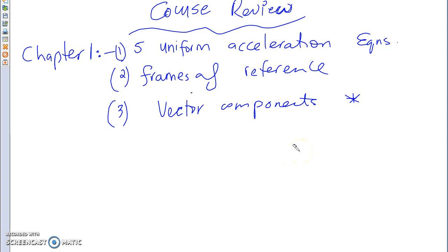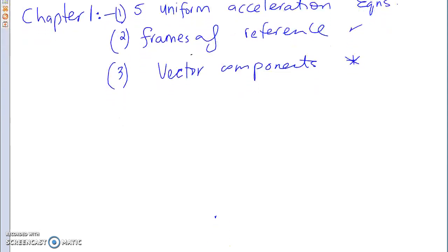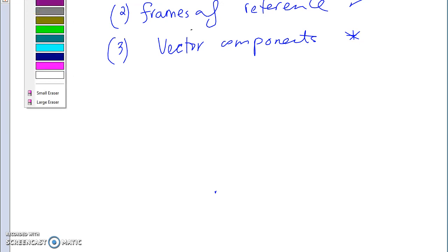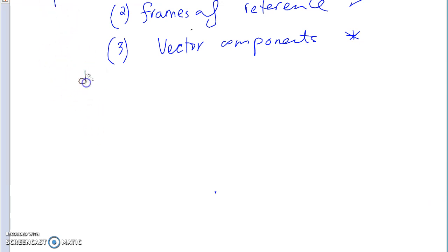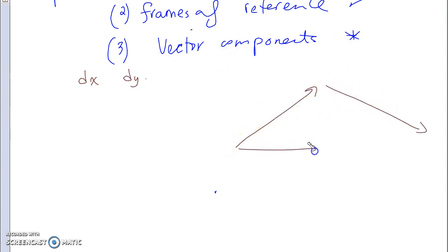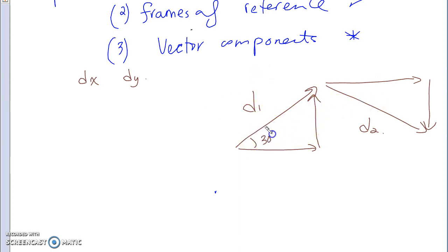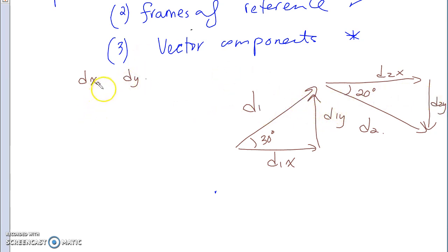I'm not going to do examples. I'm just going to review how to do vector components very quickly and then we'll go from there. So frames of reference — we do vector components in there. A very straightforward way of looking at vector components: we took a look at, for example, if you have dx and dy. The reason why we do vector components is because you have objects that are not moving in straight up-and-down or sideways motion — we have objects moving in other particular directions. So if you had d1 at 30 degrees from the horizon and d2 at 20 degrees from the horizon, that would be d1x, d1y, d2x, and d2y.